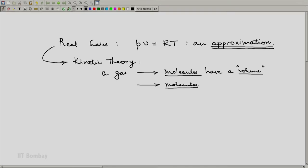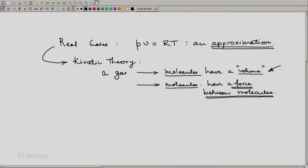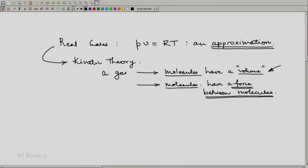And number two is molecules have a force between molecules. This force acts at small distances. At larger distances it becomes very weak. But because of this volume which the molecules themselves occupy, the volume available for a molecule to move reduces. And the second one is because two molecules attract each other, the pressure exerted by the molecules on the walls of the system, the enclosing chamber, that also reduces.